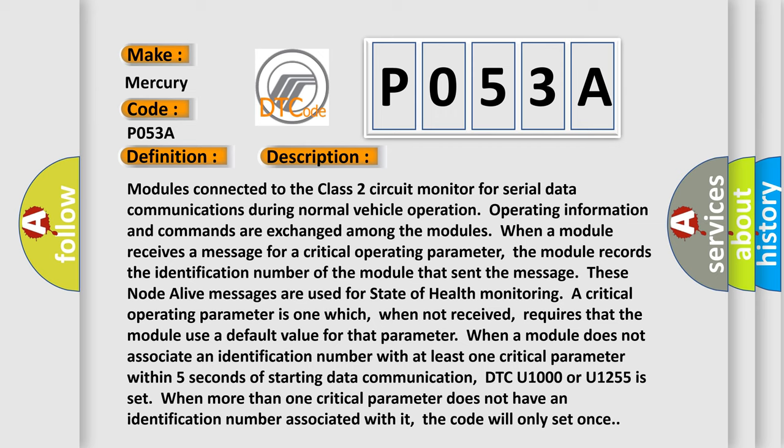the module records the identification number of the module that sent the message. These node-alive messages are used for state of health monitoring. A critical operating parameter is one which, when not received, requires that the module use a default value for that parameter. When a module does not associate an identification number with at least one critical parameter